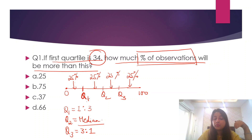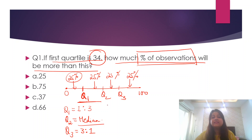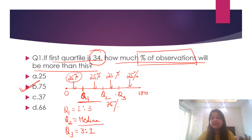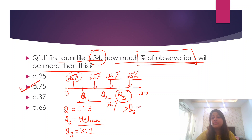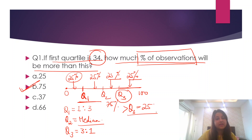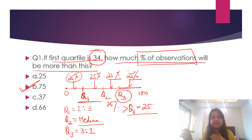You don't have to worry about the number 34 — it could be anything. We asked what percentage of observations will be more than Q1. Since Q1 divides the data set in a ratio of 1:3, 25% is below Q1 and above Q1 is 75%. So the correct answer is 75%. If it were Q2, the answer would be 50%, and above Q3 it would be 25%.